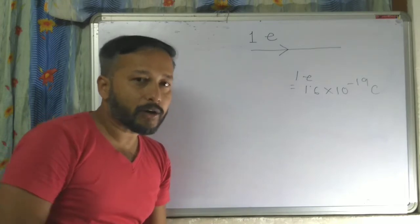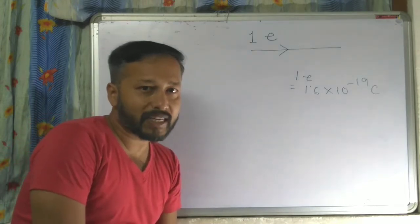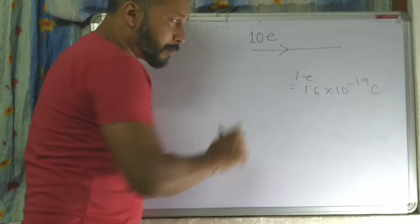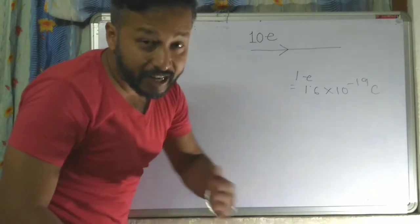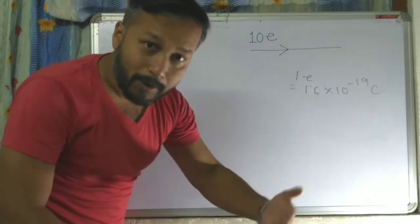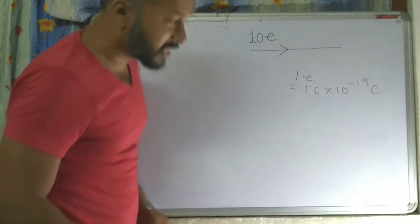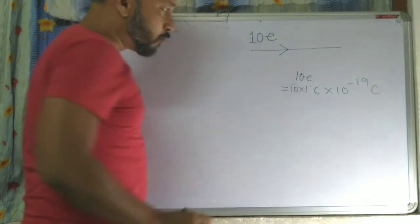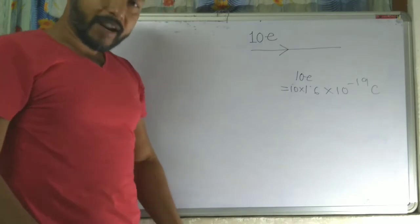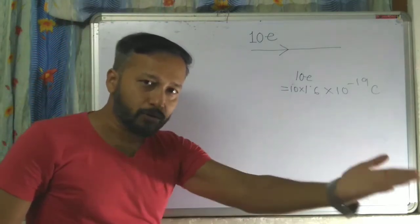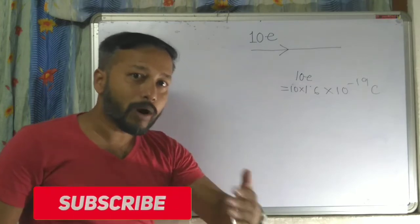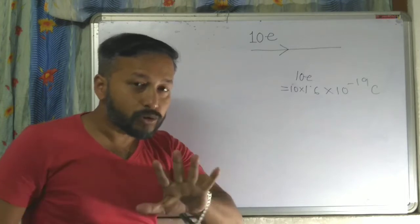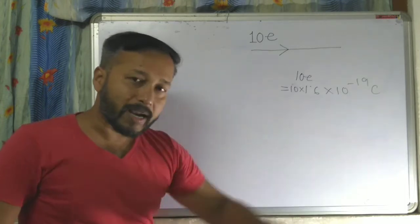If 10 electrons are passing, then the charge is 10 into 1.6 into 10 to the power minus 19 coulomb. If 1000 electrons are passing, then it is 1000 into 1.6 into 10 to the power minus 19 coulomb.